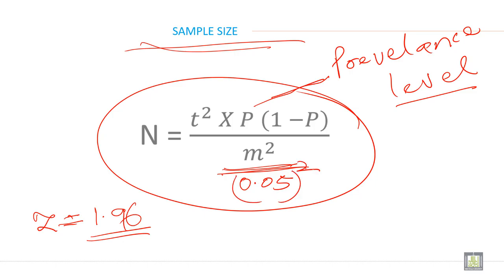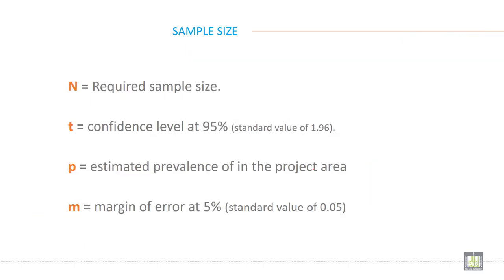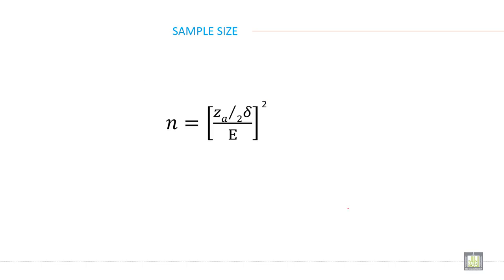So this is the formula when you know the prevalence level. Here N is required sample size, T or Z is confidence level at 95% and the table value is 1.96. Then P is estimated prevalence of projected area and M is margin of error at 5%, or 0.05.